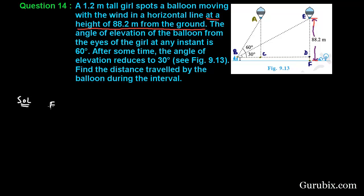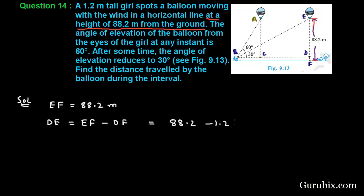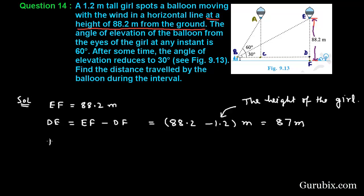We are given that EF equals 88.2 meters. DE can be calculated by subtracting DF from EF: 88.2 minus 1.2 equals 87 meters. This 1.2 meters is the height of the girl. Therefore DE equals 87 meters, and similarly AC equals 87 meters.